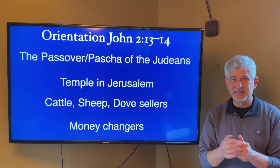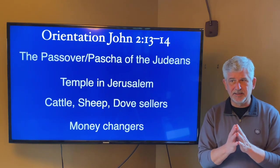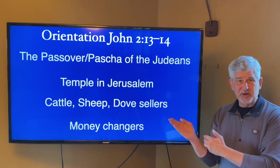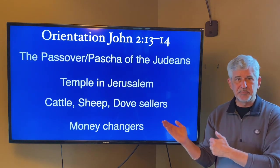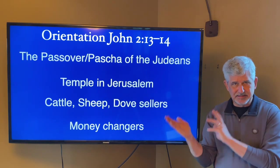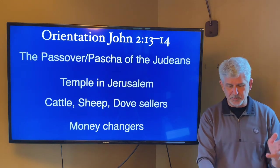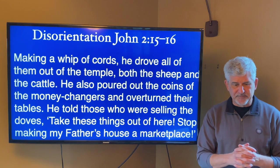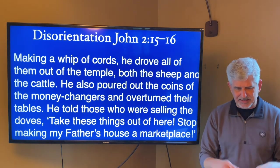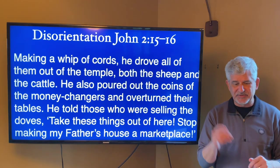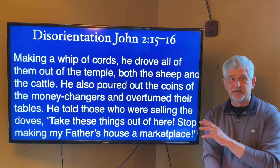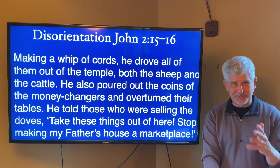So this is all the orientation. For many first century Jews before the destruction of the temple, this was all just what you'd expect to find when pilgrims are arriving from all over to celebrate the Passover. Initially this is the orientation of the story, but then suddenly we get into a really abrupt disorientation. 'Making a whip of cords, Jesus drove all of them out of the temple, both the sheep and the cattle. He also poured out the coins of the money changers and overturned their tables. He told those who were selling doves, take these things out of here. Stop making my father's house a marketplace.'